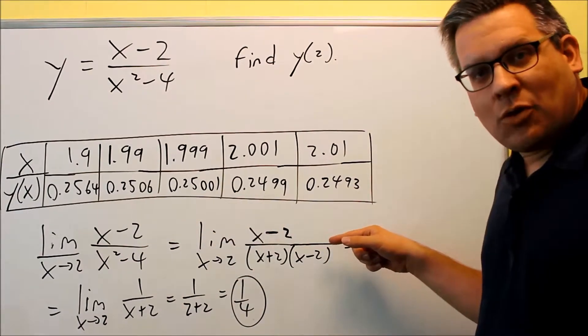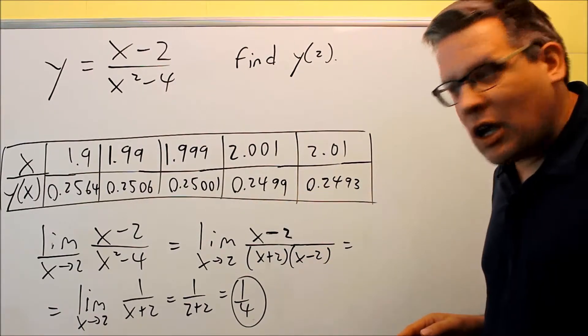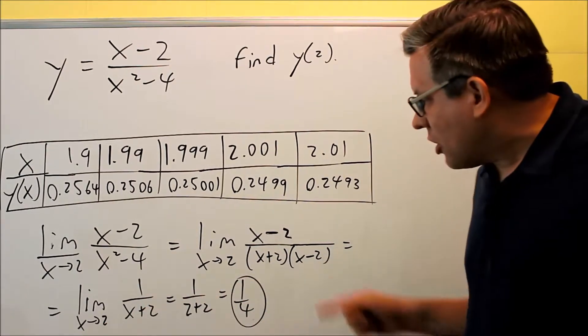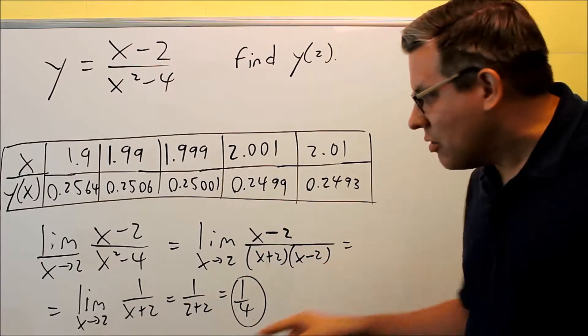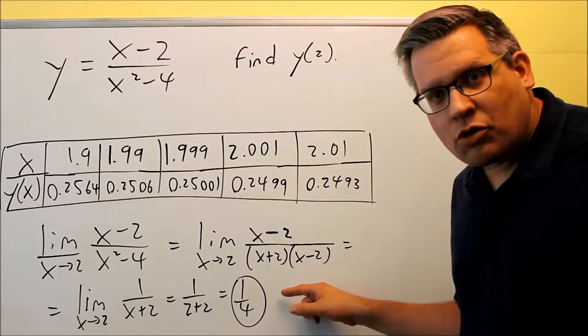You can factor the bottom one, difference of squares, and the x minus 2s, they're going to cancel. You get 1 over x plus 2 left over, and because we cancel out the x minus 2, if you were to put 2 directly into here, then we would get the exact value of 1 quarter.